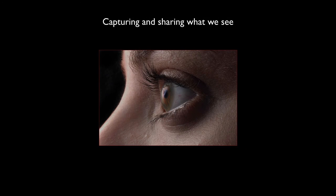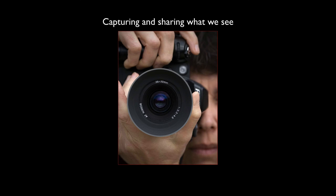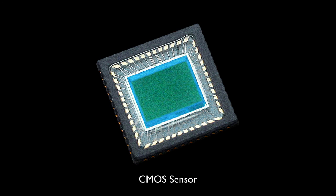We'll start with capturing images. The photographic process works much like the human eye. The eye has a lens that collects light, which passes through an adjustable iris and strikes the retina, where it is translated into electrical signals that travel through the optic nerve to the brain for processing into images. The modern digital camera replicates this process — it has a lens and an adjustable iris through which light is collected onto a light-sensitive surface.